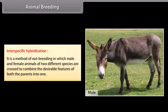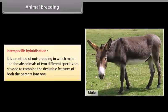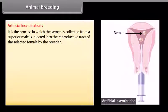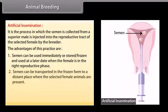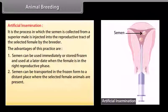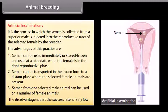One example of crossbreeding is Hisardale, a new breed of sheep developed by crossing Bikaneri ewes and Merino rams. Interspecific hybridization involves mating male and female animals of two different species to combine desirable features of both parents; for example, a mule is produced by crossing a male donkey and a female horse. Artificial insemination is the process in which semen collected from a superior male is injected into the reproductive tract of a selected female. Semen can be stored or frozen, transported to distant locations, and used on multiple females, though the success rate is fairly low.